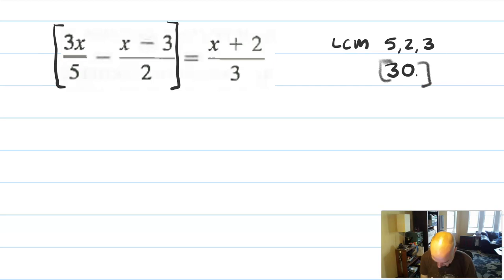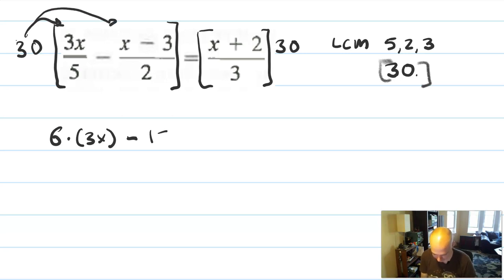So let's multiply this side by 30. And let's multiply this side by 30. When I bring 30 over to 3x over 5, 30 over 5 is really like 6. So this is like 6 times 3x minus, here 30 goes to this term, 30 divided by 2 is 15, multiply by x minus 3. On this side, 30 over 3 is 10, times x plus 2. And just like before, we'll go ahead and solve it.